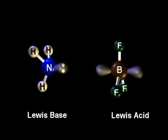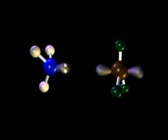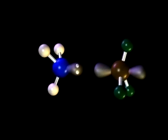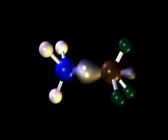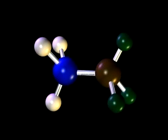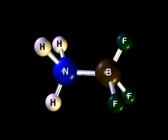Lewis acid-base theory is more general than Bronsted theory because it applies to systems that do not involve protons. For example, ammonia acts as an electron pair donor toward boron trifluoride, a molecule that has a vacant 2p orbital.